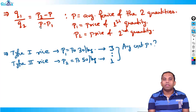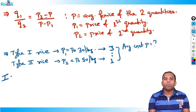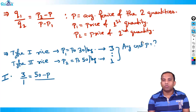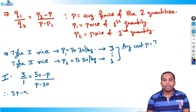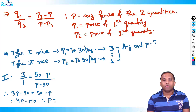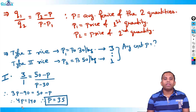First, we apply the allegation method. Using q1 by q2 equals (p2 minus p) upon (p minus p1), we have q1 by q2 as 3 by 1, p2 is 50, and p1 is 30. So: 3 by 1 equals (50 minus p) upon (p minus 30). Solving: 3p minus 90 equals 50 minus p, therefore 4p equals 140, so p equals 35. The average price should be 35 rupees.